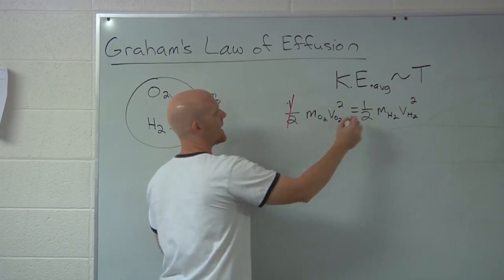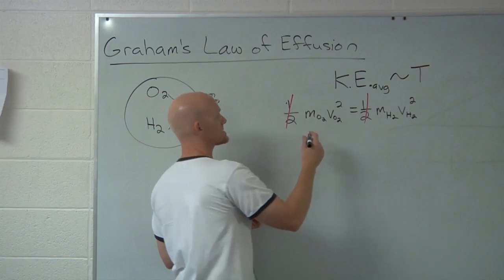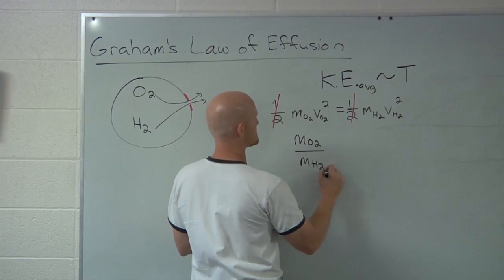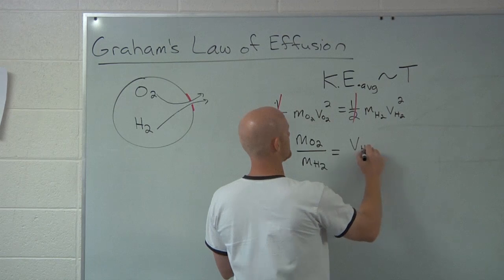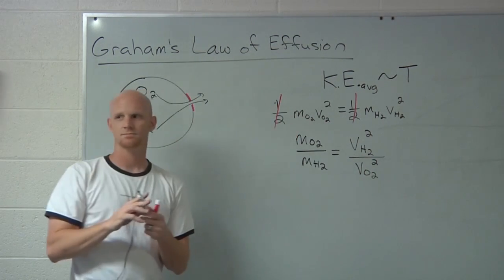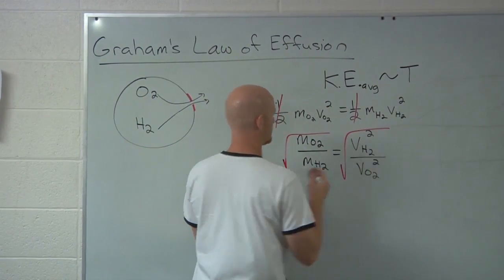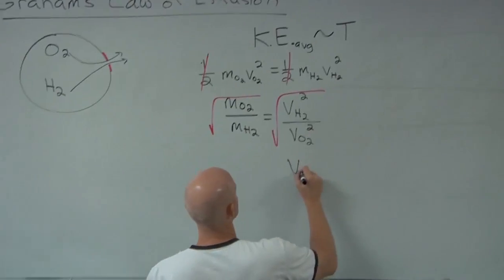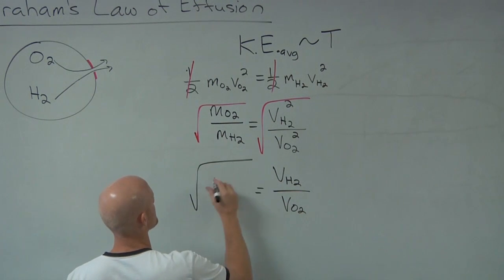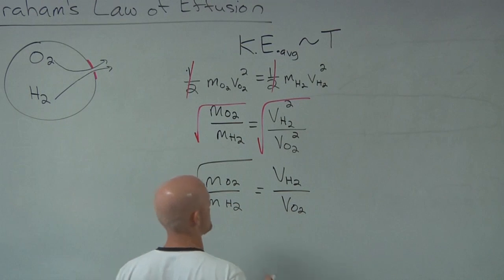Well, I can cancel out the one half right off the bat. And in this case, if we rearrange this a little bit, I can get mass of O2 over mass of H2 equals velocity of H2 squared over velocity of O2 squared. And then if I take the square root of both sides, I get velocity of H2 over velocity of O2 is equal to the square root of the mass of O2 over the mass of H2.